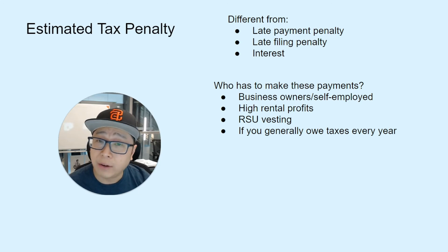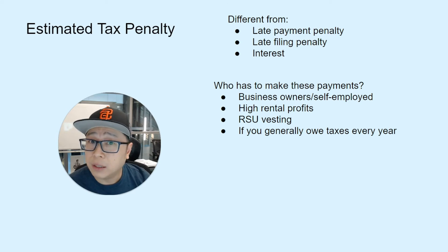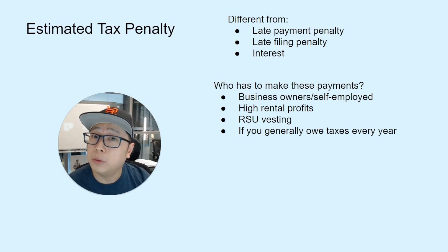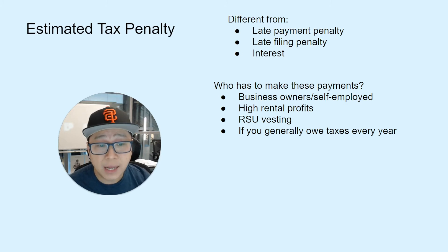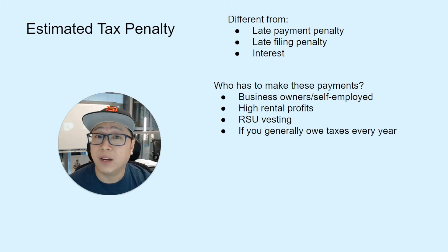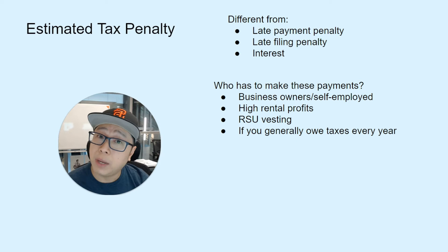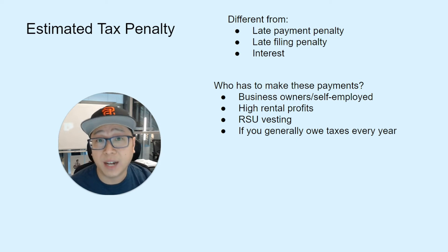Usually the people who have to make these prepayments are business owners, because there are no withholdings on business profits. People with high rental profits face the same situation, since rental income doesn't have any withholdings. People who receive RSU vesting often don't have enough taxes withheld. And generally, if you owe taxes every year when you file, it might be good to consider making these prepayments to avoid any penalties.